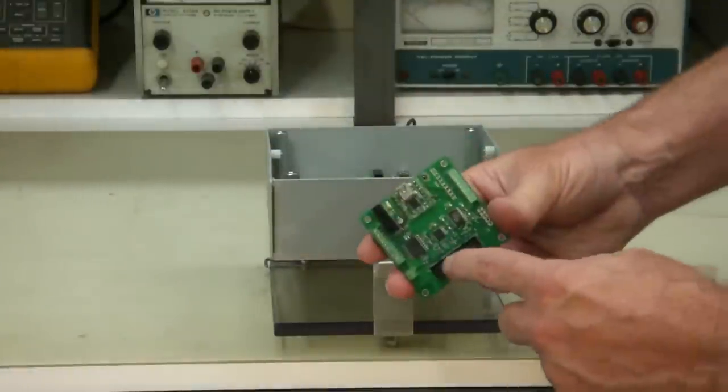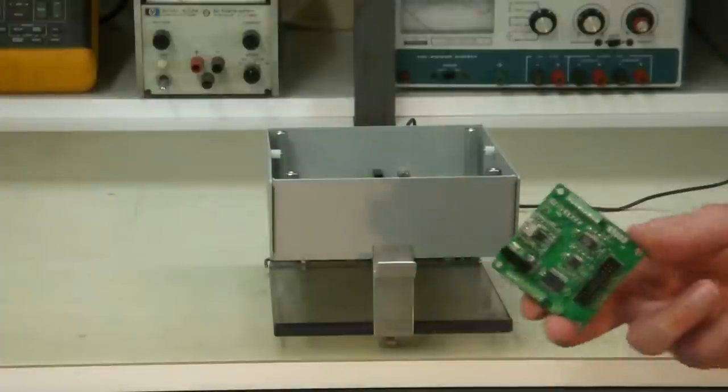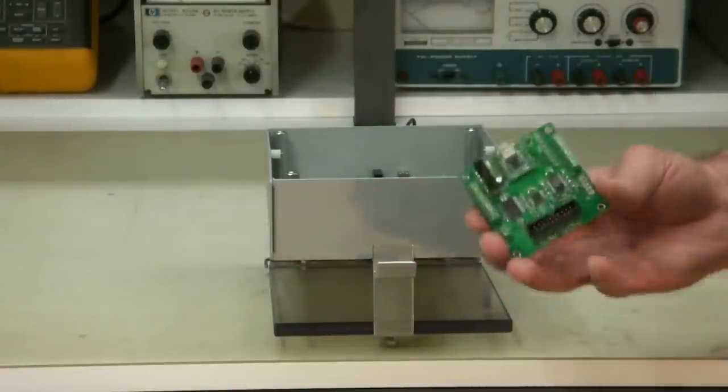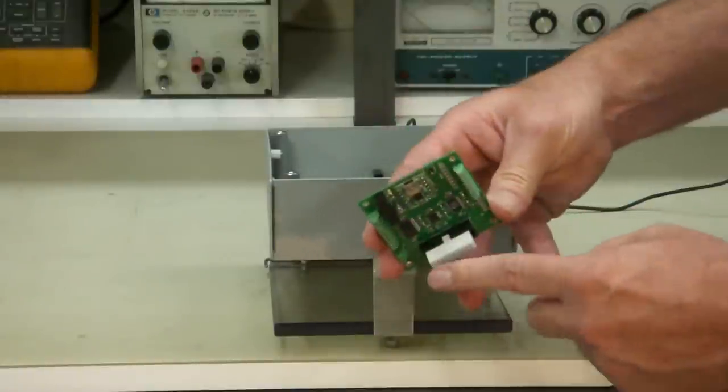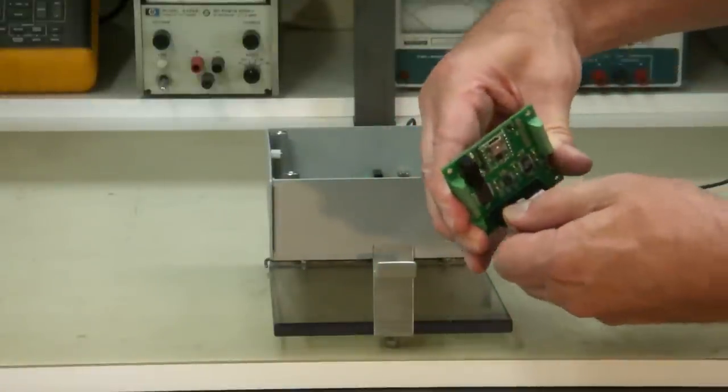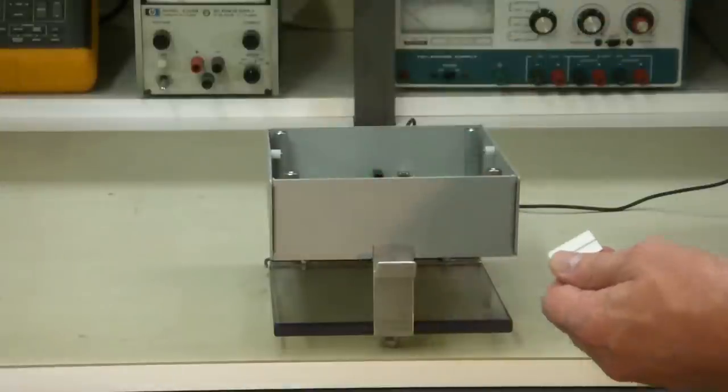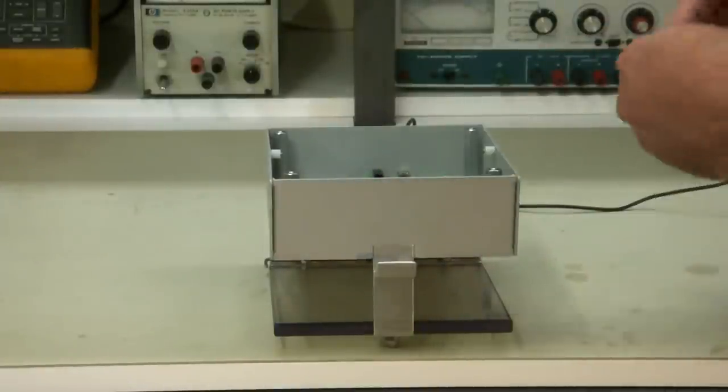Another way is wire wrap. You can wire wrap directly to these pins, but we don't like to do that. We like to put in one of these connectors by 3M, just like that, and wire wrap to here. Then we can pull this out, keep our wiring in, and replace the board.